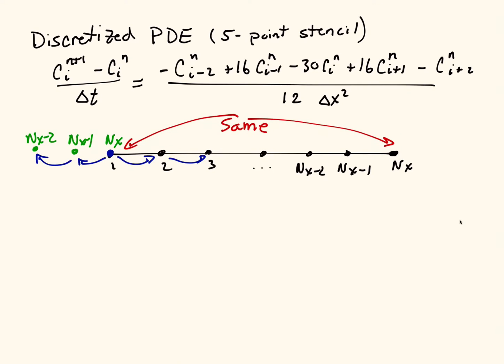So if we write this discretization at i equals 1, it would look like (c1^(n+1) - c1^n)/Δt equals minus c... And here I have my i minus 2 term, and my i minus 2 term is going to be cnx-2. So this is cnx-2 because that's the second point to my left, at the nth time.